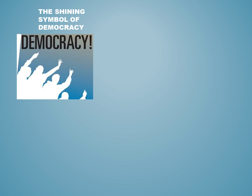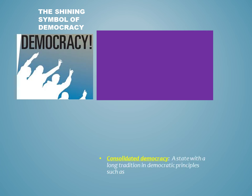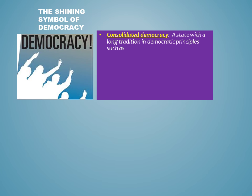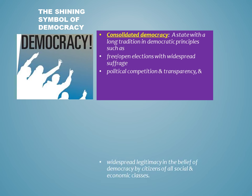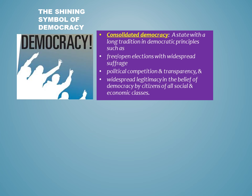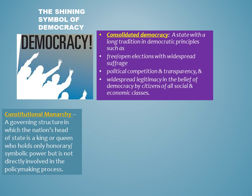The United Kingdom is considered by many as one of the shining symbols of democracy in world history. The UK is considered a consolidated democracy, which means it has a long-standing tradition of democratic principles, including free and open elections with widespread voting rights, high levels of political competition and transparency, and widespread legitimacy from within its people of the beliefs of democracy from people of all social and economic classes.